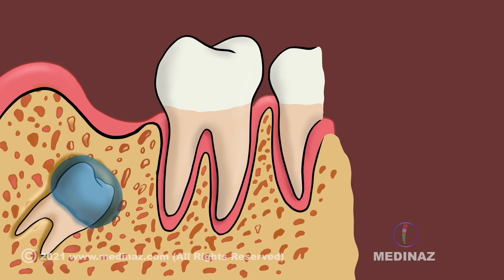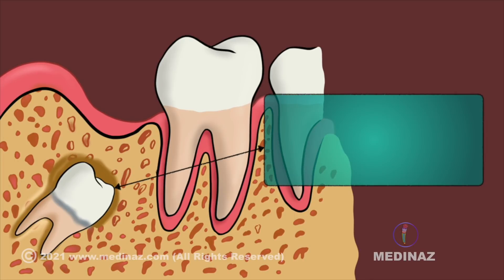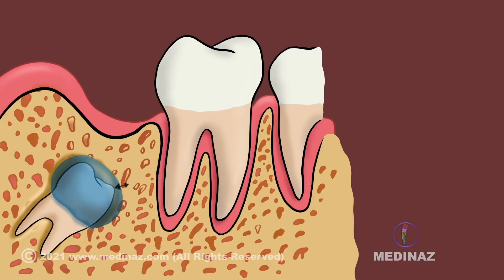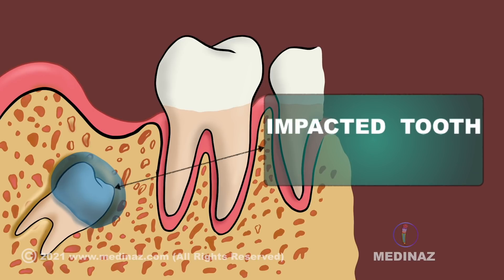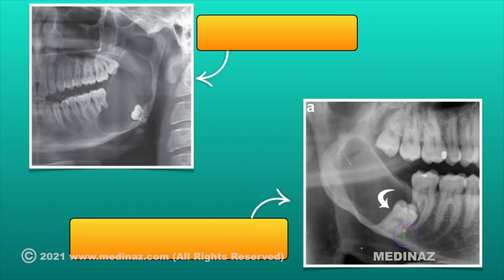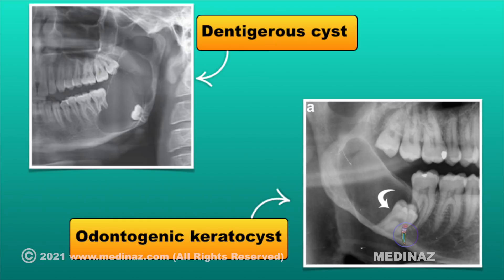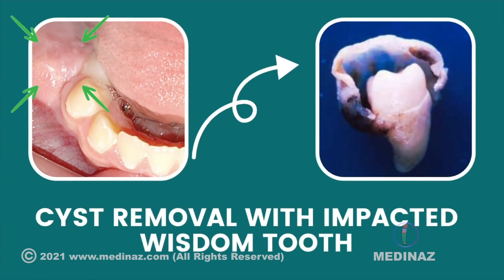The next important cause is a dental cyst. A dental cyst is nothing but an abnormal fluid-filled sac. If the wisdom tooth is impacted, a fluid-filled sac can form surrounding this impacted tooth, which is called a cyst. This cyst can grow and damage the surrounding bone, tissue, and adjacent tooth. In these radiographs, you can see different types of cysts associated with the impacted third molar, like a dentigerous cyst and odontogenic keratocyst. In such a condition, the dentist will remove the cyst along with the associated wisdom tooth.